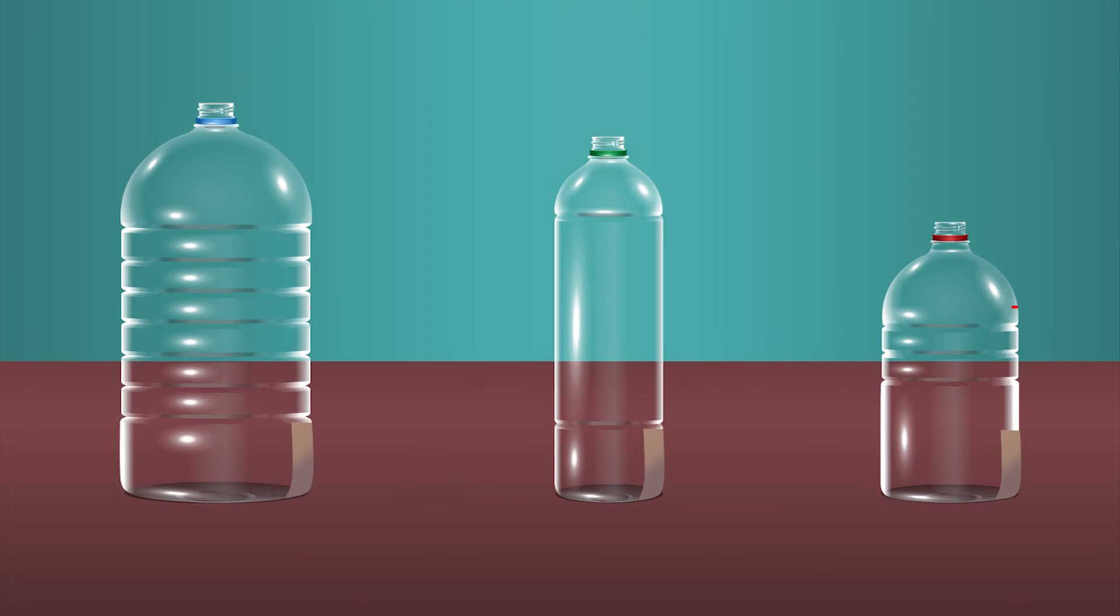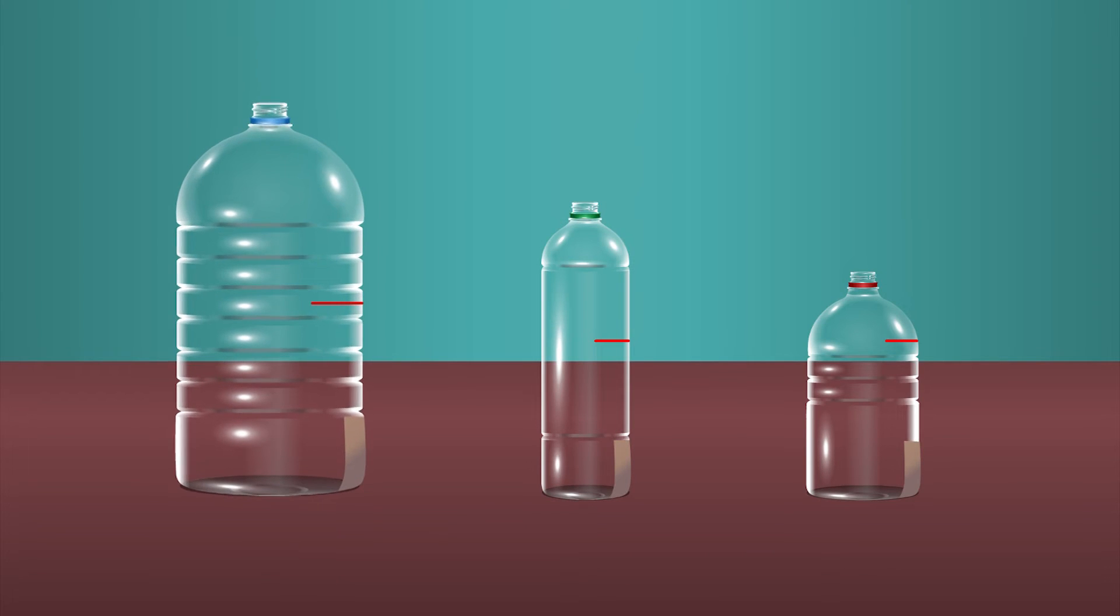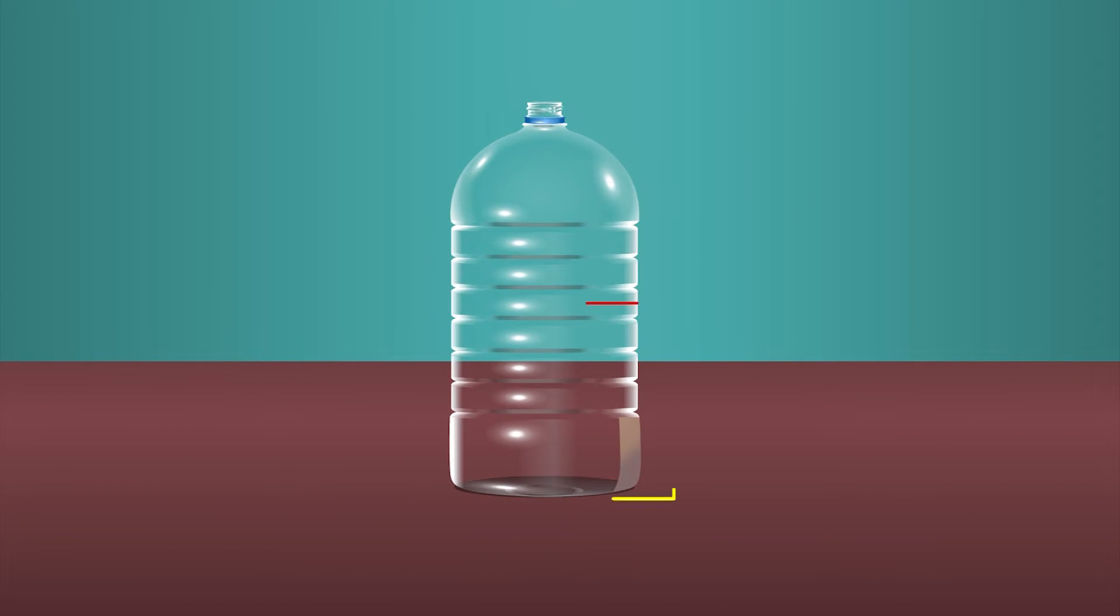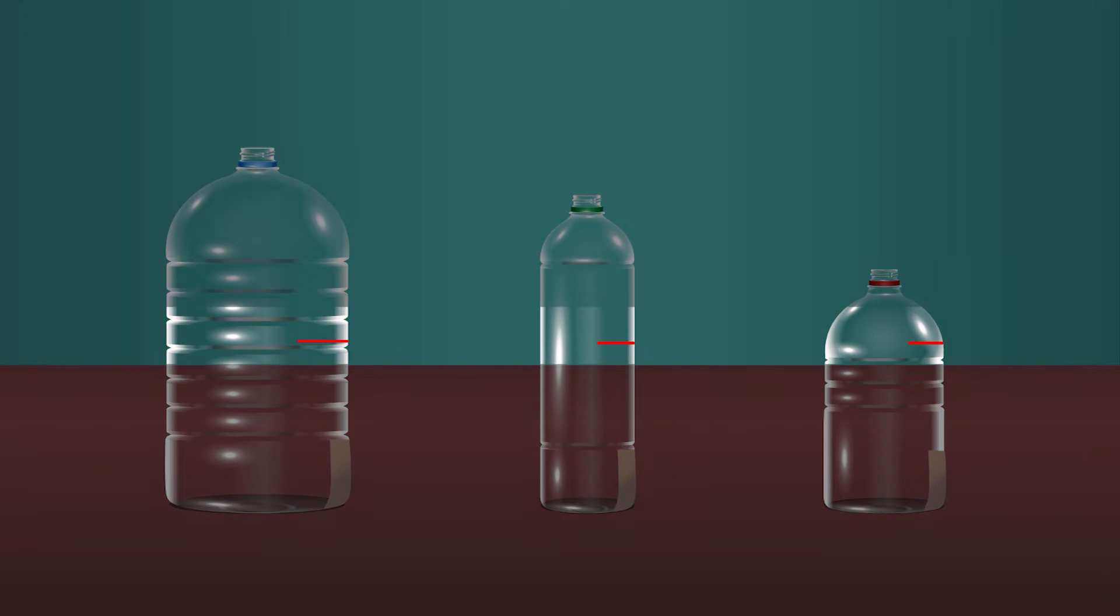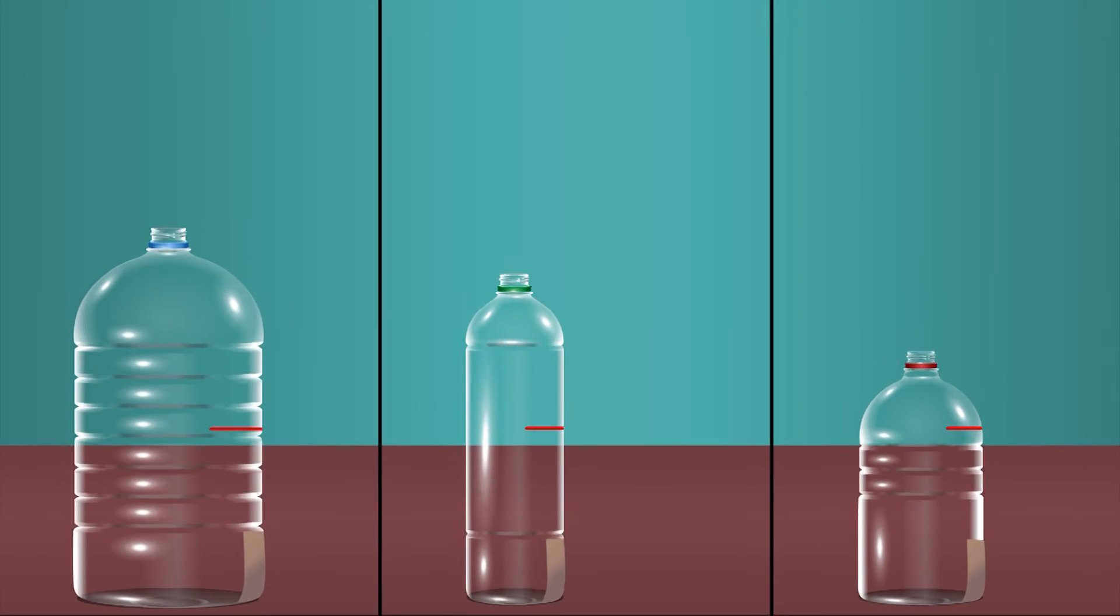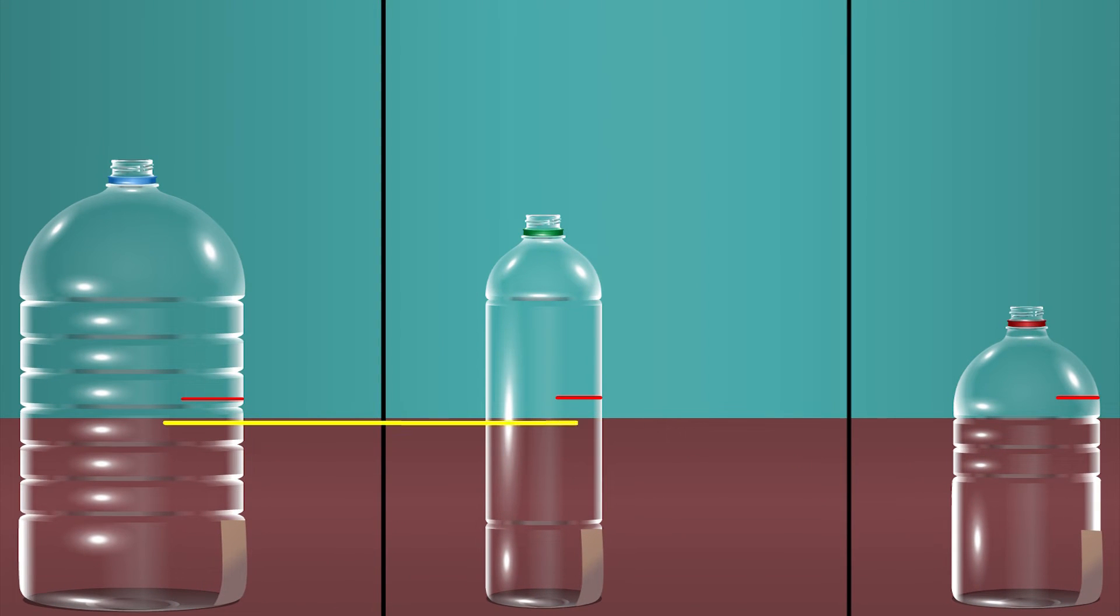Mark a point near the top of the bottle of the least height. Measure the height of this mark from its bottom. Make marks at the same height in the remaining two bottles also.